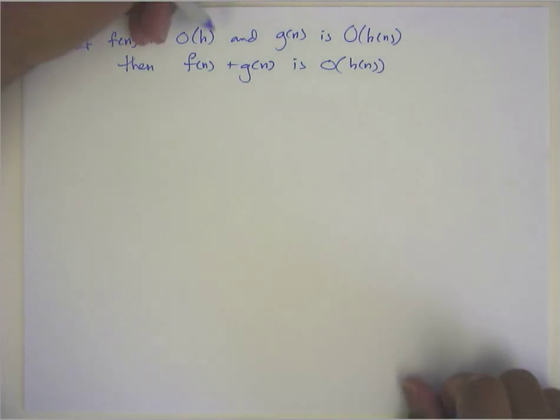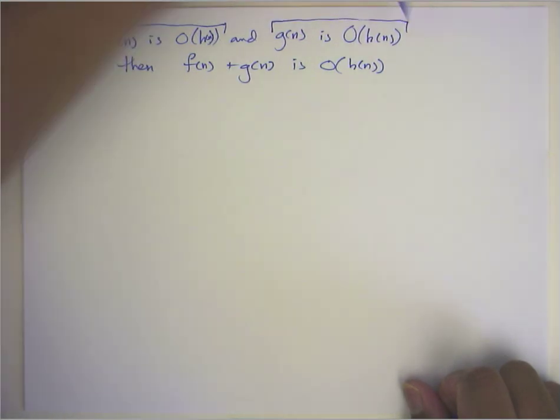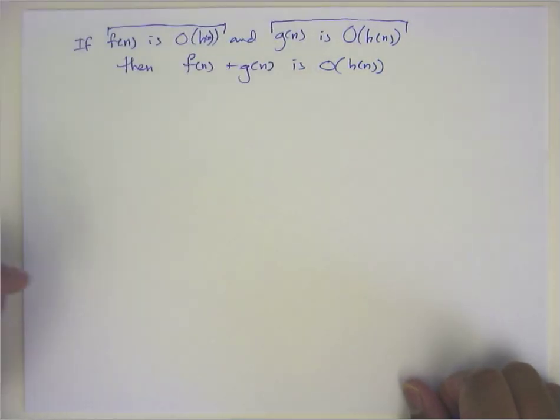And actually, I see an error here. This should be h(n). So I'm going to write this out, write both of these properties here, or this one, or at least both of these parts of the problem using the definition of big O.